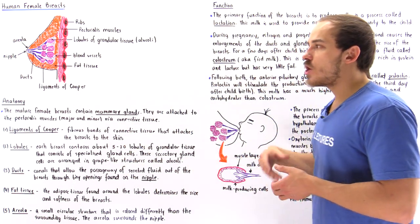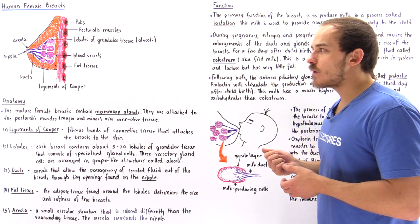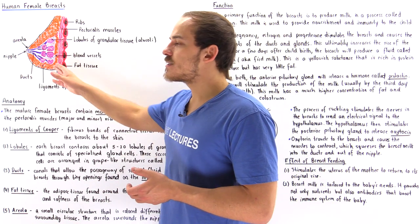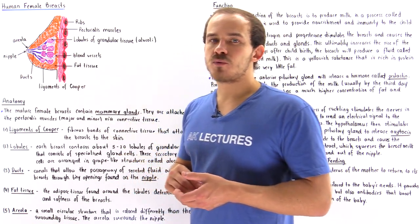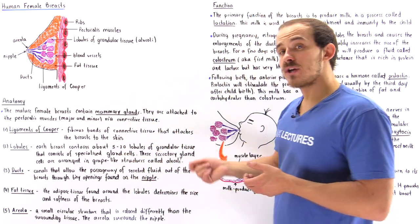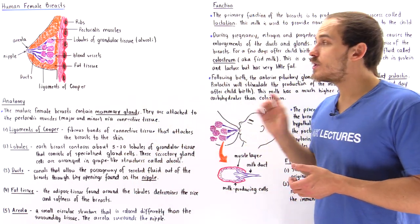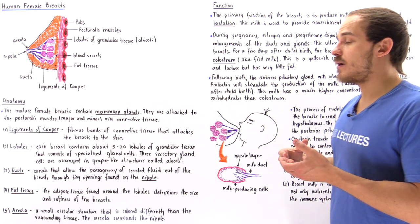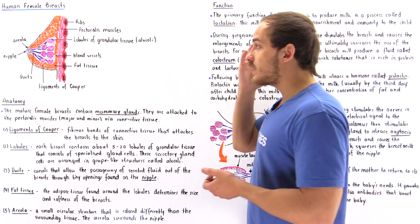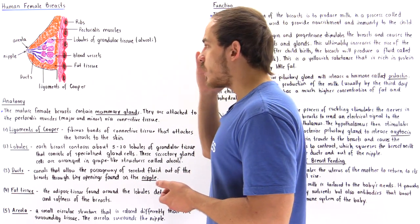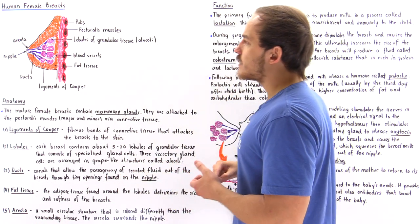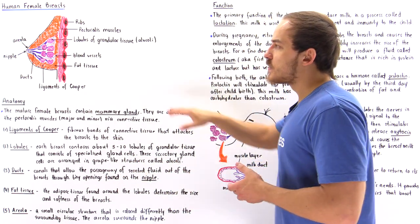The arteries carry the oxygenated and nutrient-filled blood to the cells of the breast, while the veins carry away the deoxygenated blood containing waste products away from the cells found inside the breast.